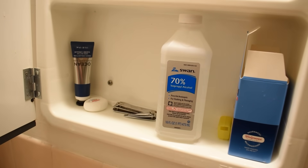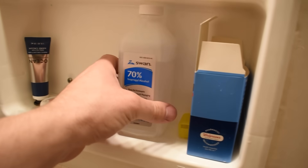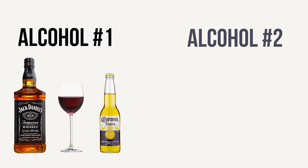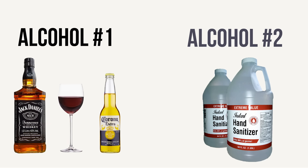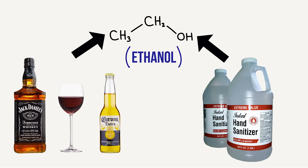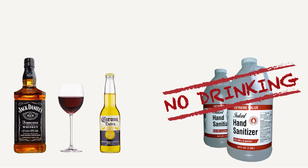But why can't you drink rubbing alcohol? After all, it's just alcohol, right? Well, yes and no. There are two types of alcohol you can buy: the kind you drink, either as spirits, wine, or beer, and the kind you clean with, rubbing alcohol. At one time, both of these were made using the same alcohol molecule — ethanol. However, they were manufactured differently due to government mandates.